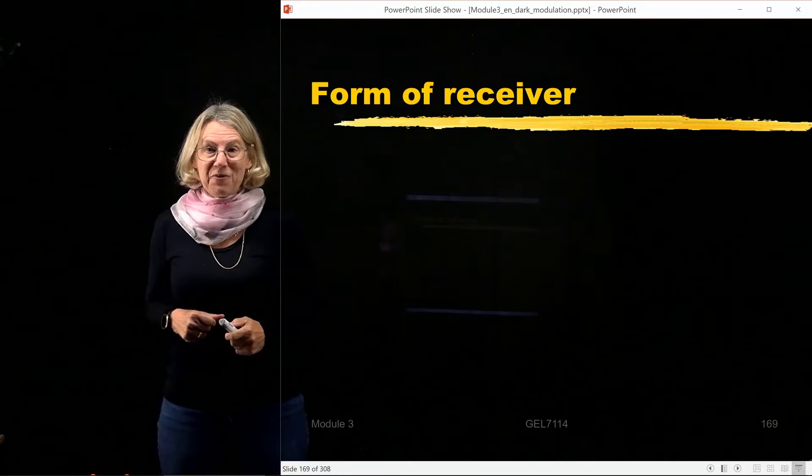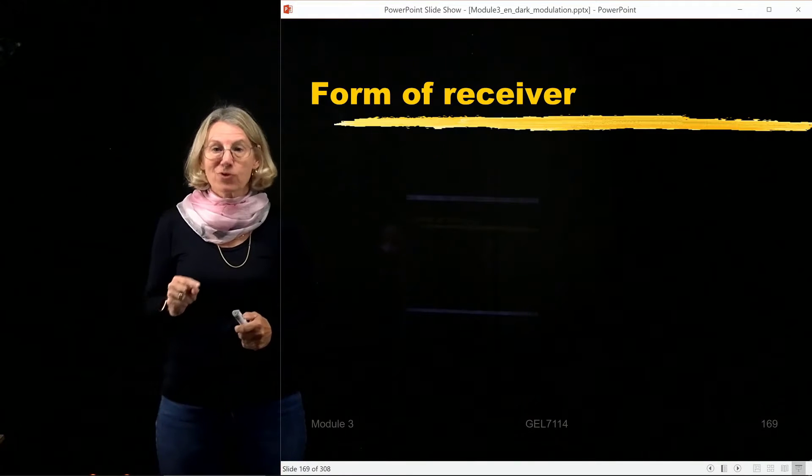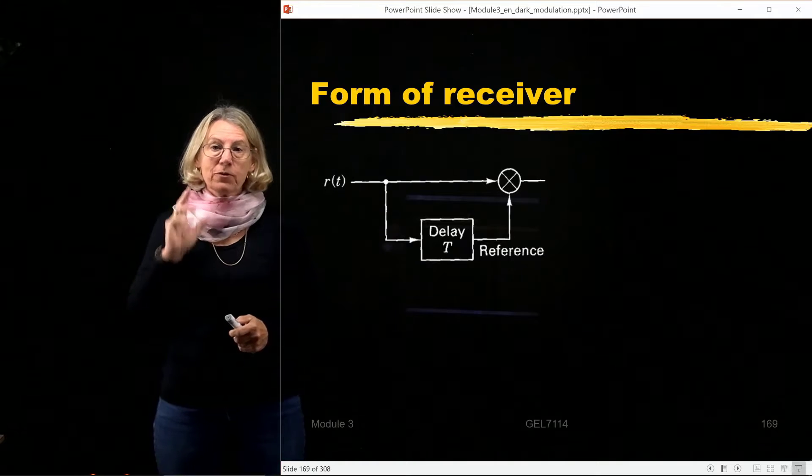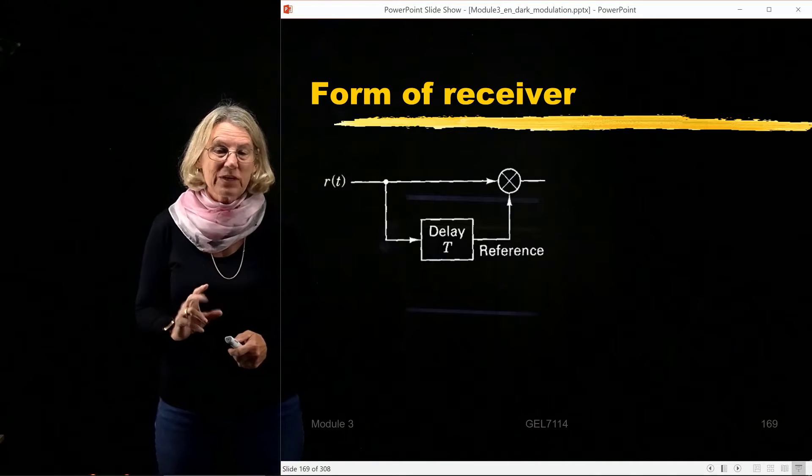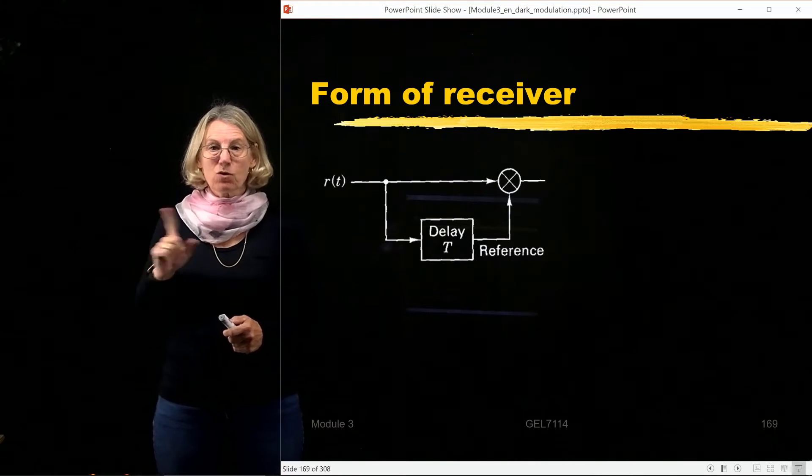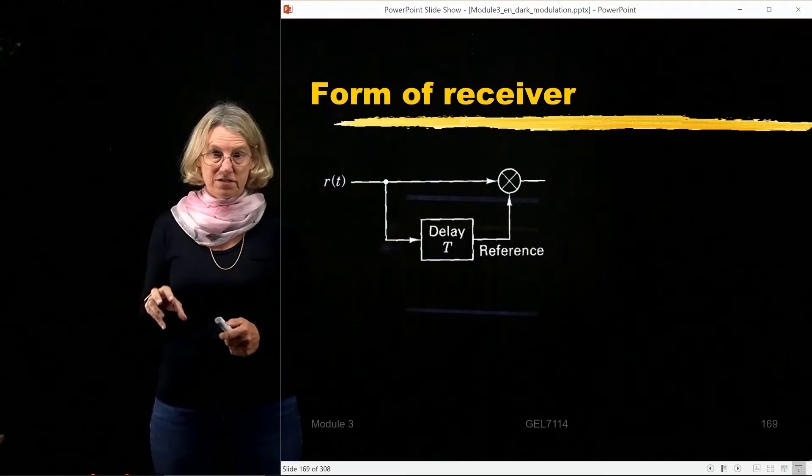So before I show you how it works, let me tell you about how that's going to change the form of our receiver. I'm going to be using a receiver which actually does not have a local oscillator. It doesn't have its own oscillator.